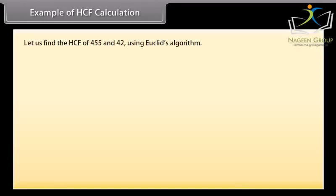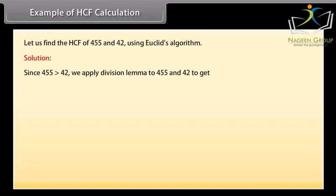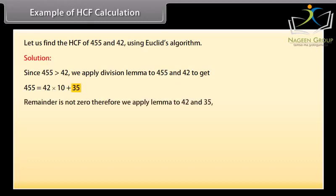Example of HCF calculation. Let us find the HCF of 455 and 42 using Euclid's algorithm. Solution: Since 455 is greater than 42, we apply division lemma to 455 and 42 to get 455 equals 42 into 10 plus 35.